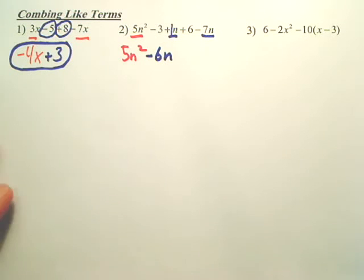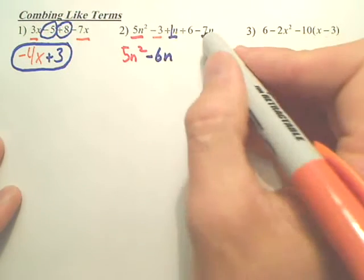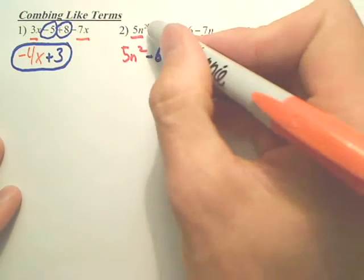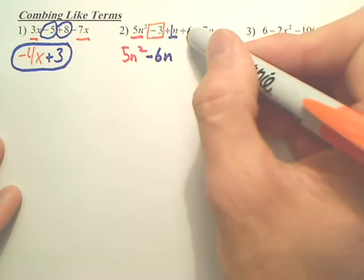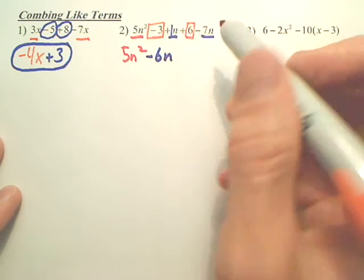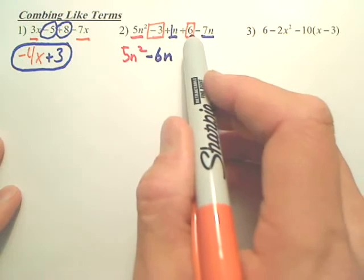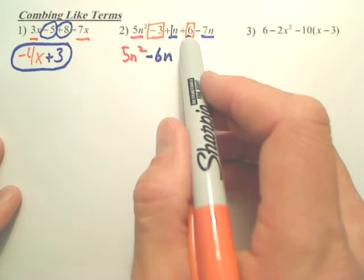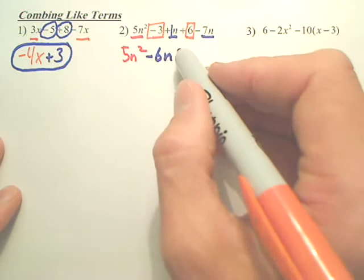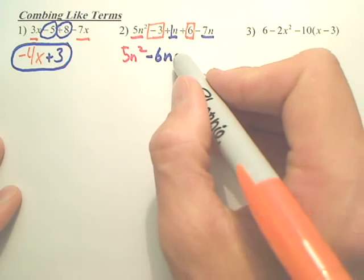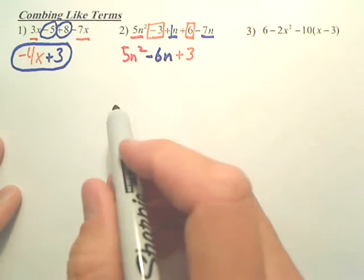Lastly, the numbers. How are you going to put those together? I'm lastly going to take care of these numbers. I have a negative 3 and a positive 6. Negative 3 and positive 6 would give me a positive 3 left over.